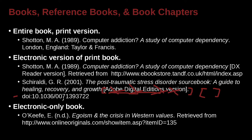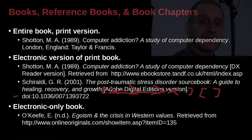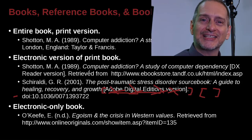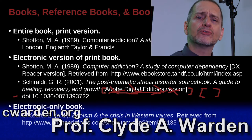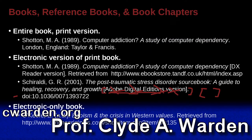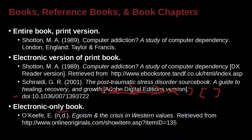What if you have an electronic book that has no publication date? Is that possible? Well, anything is possible — there are many different ways to publish these days. If there is no date, then you use 'n.d.' — small n, period, small d, period, with no space inside: (n.d.). There are spaces before and after the parentheses, but no space inside. N.D. means no date.